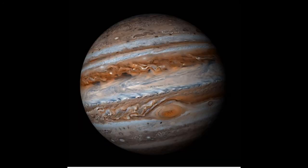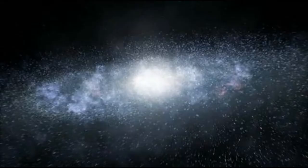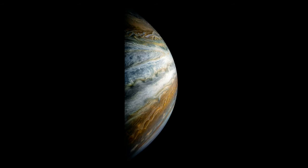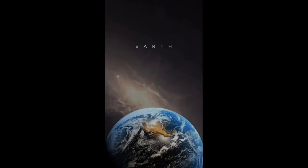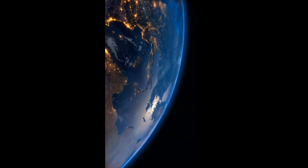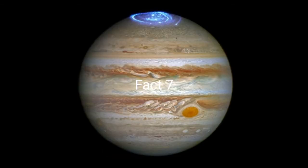Fact six: the diameter of the Sun is approximately 400 times larger than the diameter of the Moon, but we can't tell this because of the similarity in apparent size from Earth. This is because the distance from the Earth to the Moon is 400 times less than the distance from the Earth to the Sun, so the Sun and Moon appear roughly similar in size.